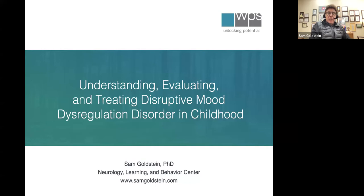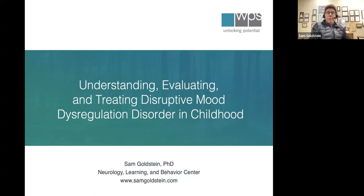Moving forward in time, ADHD and children with comorbid oppositional or anxiety problems eventually morphed into a bipolar disorder in childhood. The same patterns of behavior were, by the 90s and into the early 2000s, referred to as bipolar. But due to concerns longitudinally about whether those children actually developed bipolar disorder in adulthood — which wasn't the case — questions were raised about how to best diagnostically understand and define these problems, which fall in two broad areas: extensive disruptive emotional outbursts and this pattern of irritability.